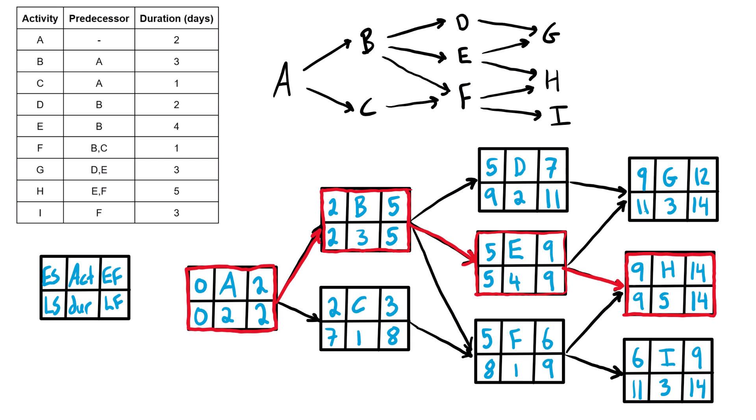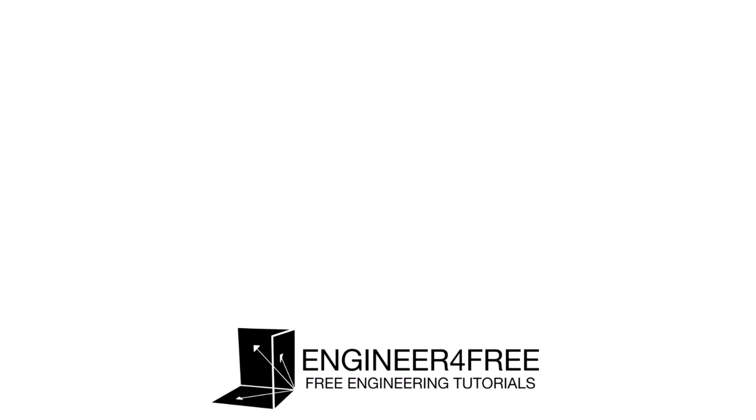The critical path means that if any of those critical activities are delayed by even one day, the entire project will be delayed. The project duration is 14 days. Non-critical activities have what's called float or slack — they can be delayed for some amount without delaying the entire project. I've made videos on float and slack as well. Hopefully that's helpful — I'll put up a link to another video covering another network diagram and critical path problem. Check that one out, and hopefully you have an awesome day.